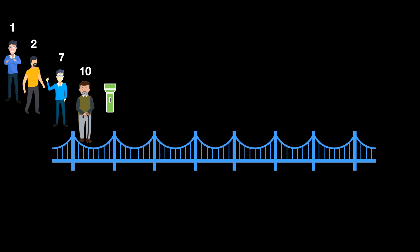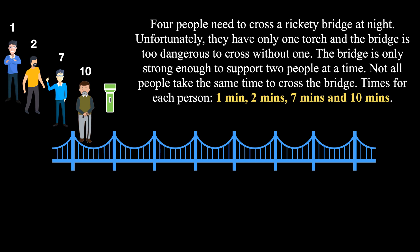Let me simplify the puzzle. Four people need to cross a bridge at night. Unfortunately they have only one torch and the bridge is too dangerous to cross without one. The bridge is only strong enough to support two people at a time. Not all people take the same time to cross the bridge.